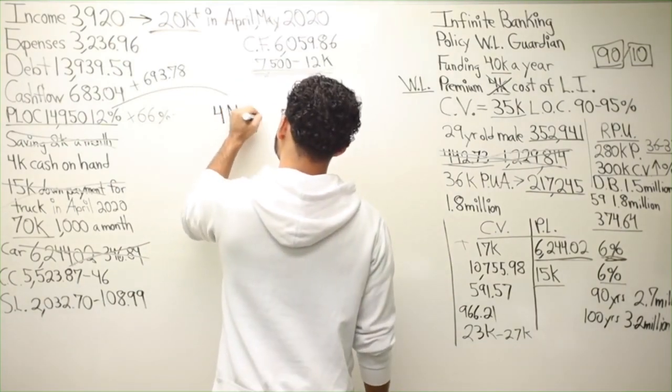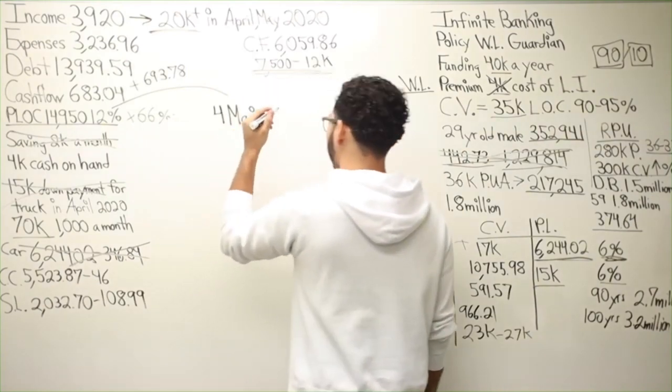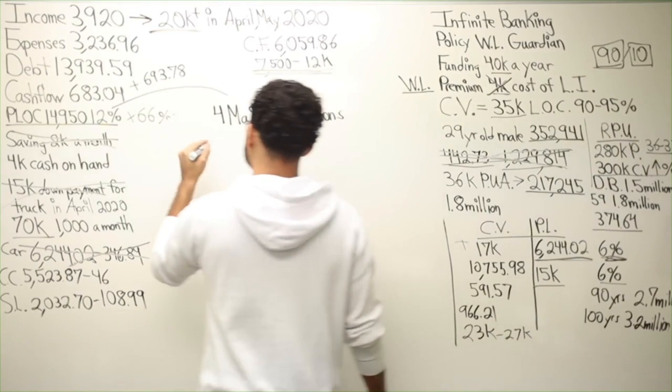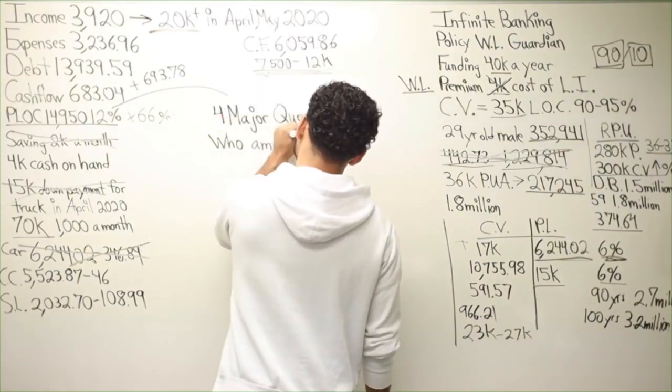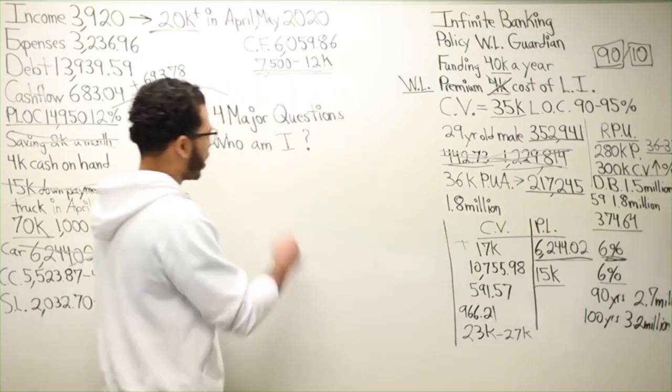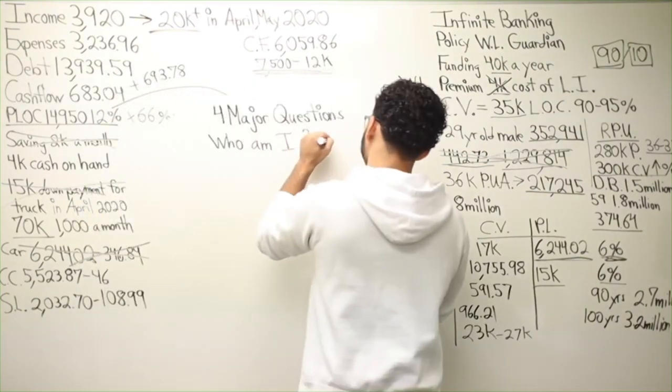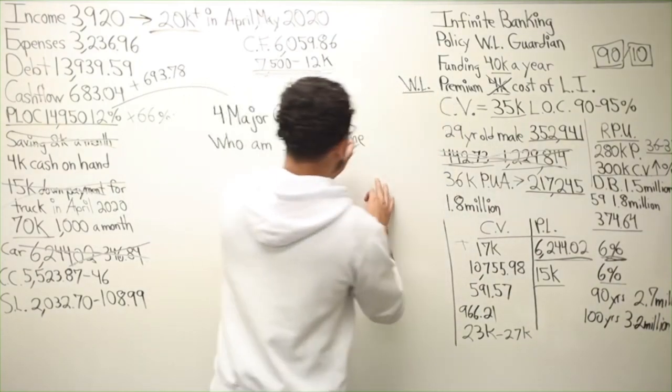The faster you answer these questions, the faster you will achieve your goals, your wants and desires. Four major questions. The first one is: who am I? Once you figure that out - and I have an easy way to answer that - it's your name. That's who you are. Your name, right? What does your name mean?